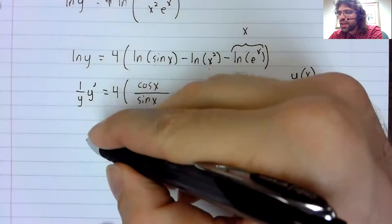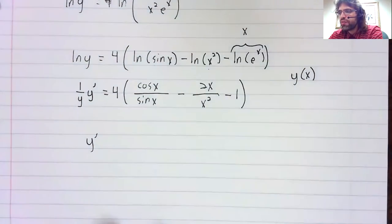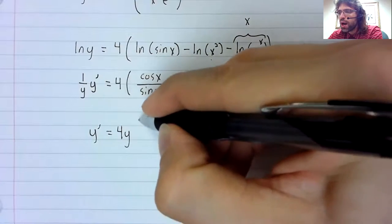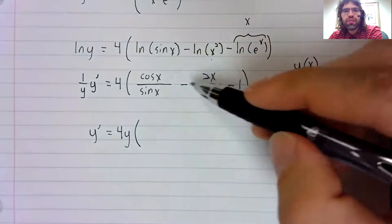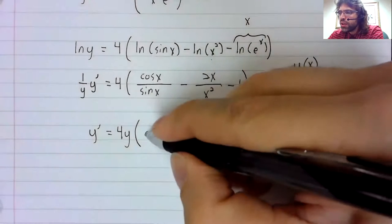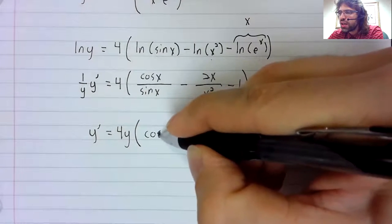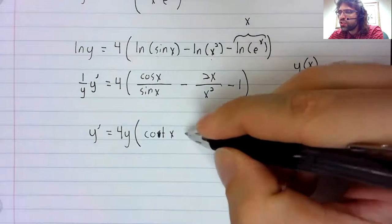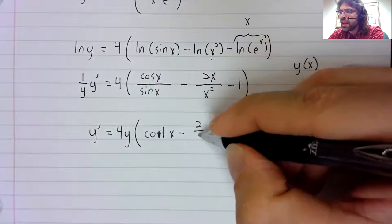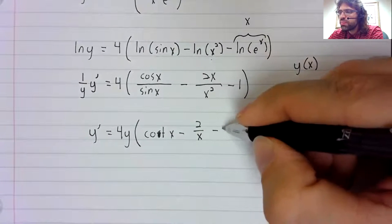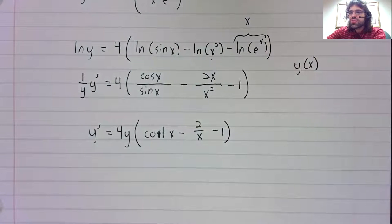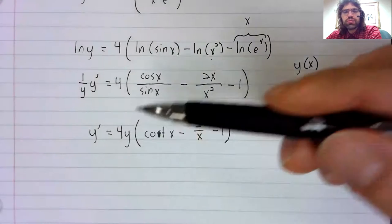So now we'll solve for y prime. It's 4y times all of this. Simplifying a little as we go: the cosine over the sine is the cotangent. This x and this x squared partially cancel. No simplification here. One's as easy as it gets. And here's y prime.